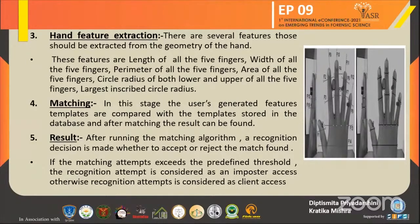Then matching. In this step, only comparison is done. The user's generated feature templates are compared to the templates stored in the database. Then result: after matching, we get the result — whether the extracted features belong to a genuine user or a fraudulent user. When matching attempts exceed the predefined thresholds, the attempt is considered an imposter access; otherwise, the attempt is considered client access.